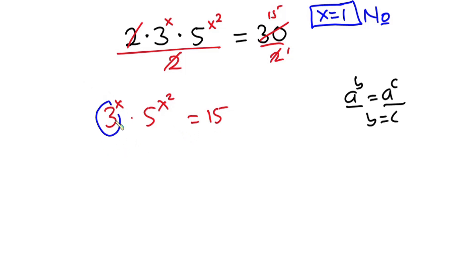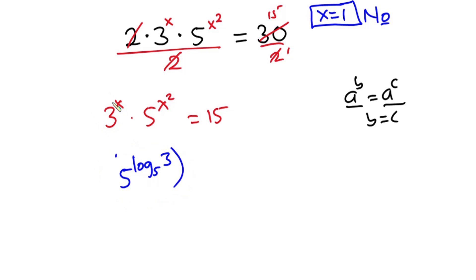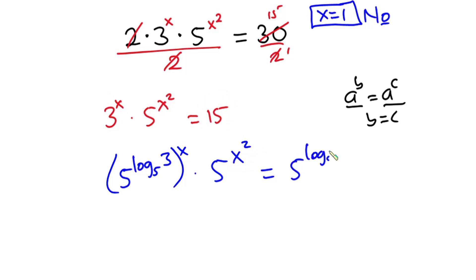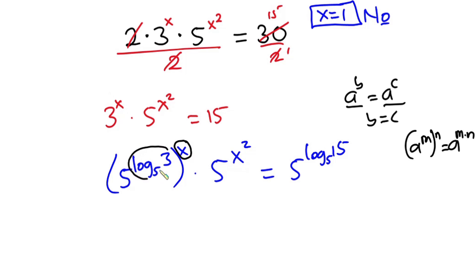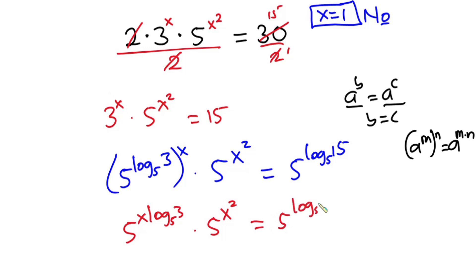Watch this. I'll rewrite the 3 as 5 to the power log base 5 of 3 — that whole expression represents the 3 — then raise it to the power x. Times 5 to the power x squared. From index laws, if I have a to the power m, to the power n, this equals a to the power m times n. So I can multiply x by log base 5 of 3, giving 5 to the power x·log₅(3) times 5 to the power x squared.